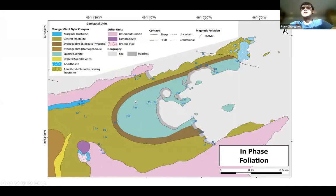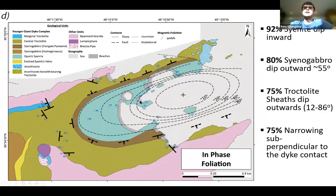So looking at the foliation, this is the simple pattern. We see that in the center of the syenite, we have the majority, 92%, dipping inwards and reflecting this basin, which shallows towards the center. As we go further out, we can see the syenogabbro, the majority dip outwards, moderately, and then three quarters of the troctolite sheets also dip outwards at a varying angle.